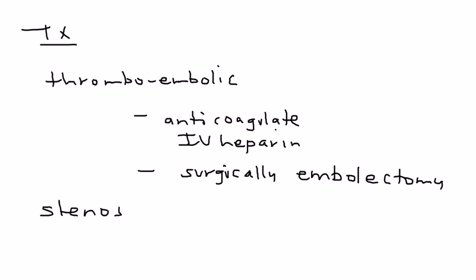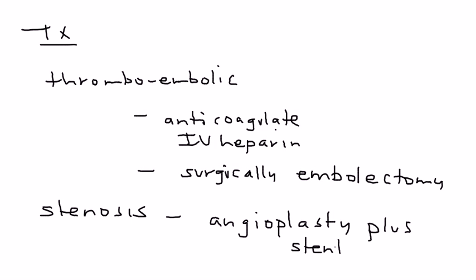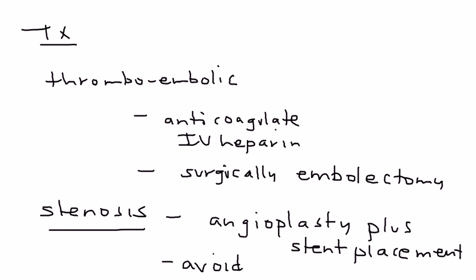If there's a stenosis, that's treated differently — just like with a patient's heart, you have to go in and place a stent to open up that stenotic area. One thing that really shows up on licensing exams: in stenosis, please avoid giving ACE inhibitors, because ACE inhibitors in a patient with renal artery stenosis can make the situation worse. That is contraindicated.